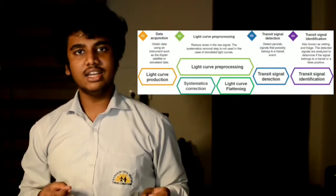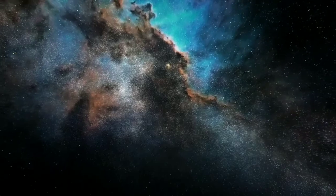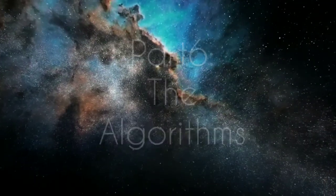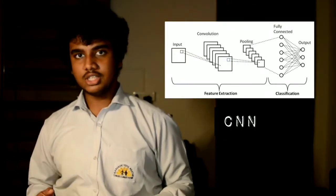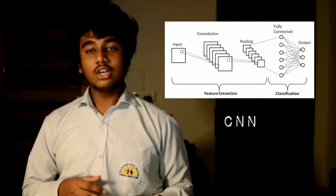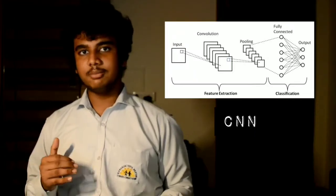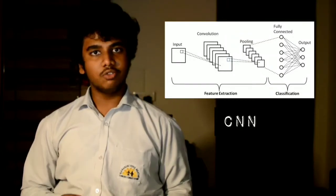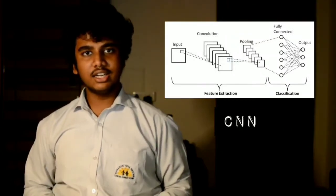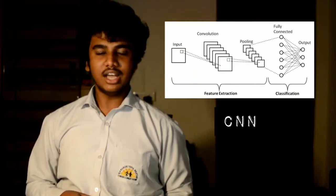The fourth step is identifying transit signals. After building the model, we needed to apply some algorithms to create the machine learning model. The first algorithm we used was CNN, or Convolutional Neural Networks. These are specialized neural networks which use convolutions in place of general matrix multiplication in at least one of their layers. The architecture of CNN includes convolutional layers, pooling layers, fully connected layers, receptive field, and rings.